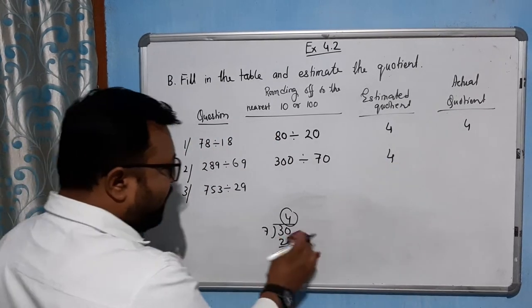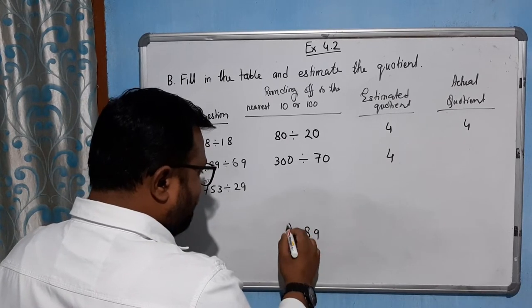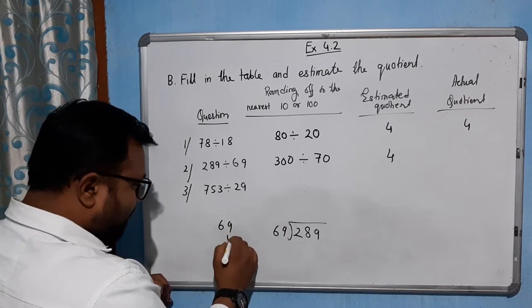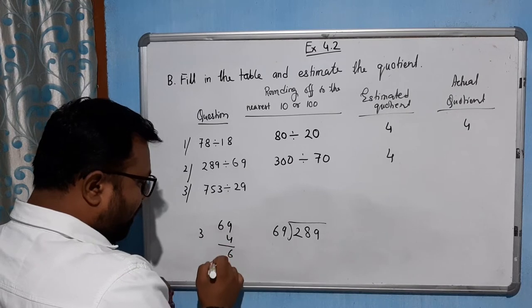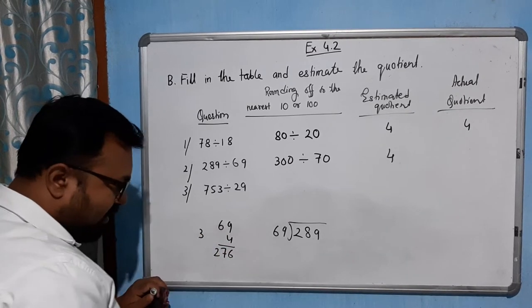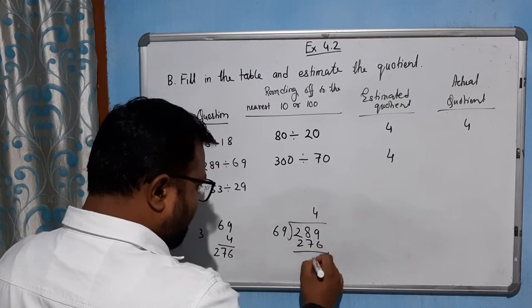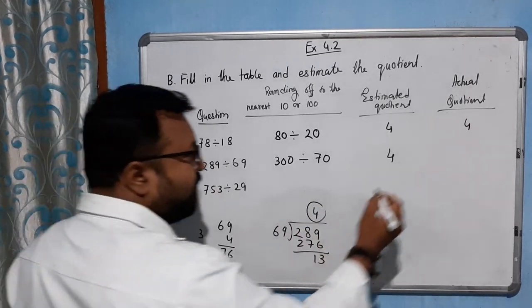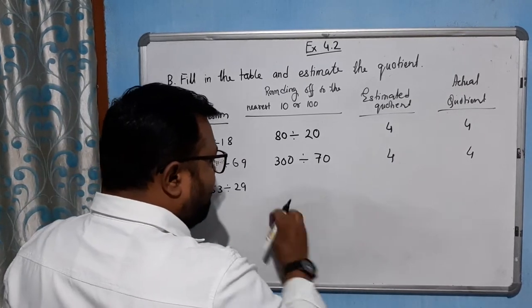Let's check if it will be correct. 289 divided by 69, let's try by 4: 4 times 9 is 36, carry 3; 4 times 6 is 24, plus 3 gives 276. So the actual quotient is also 4. Now come to the last part of this question.